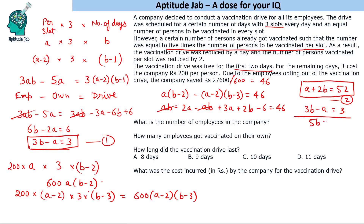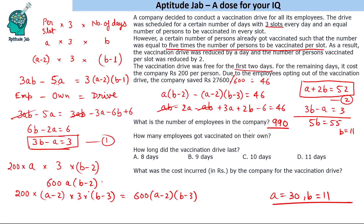Adding the two equations — equation 1: 3b minus a = 3, and equation 2: a plus 2b = 52 — we get 5b = 55, so b = 11. Substituting back gives a = 30. So a is 30 and b is 11.